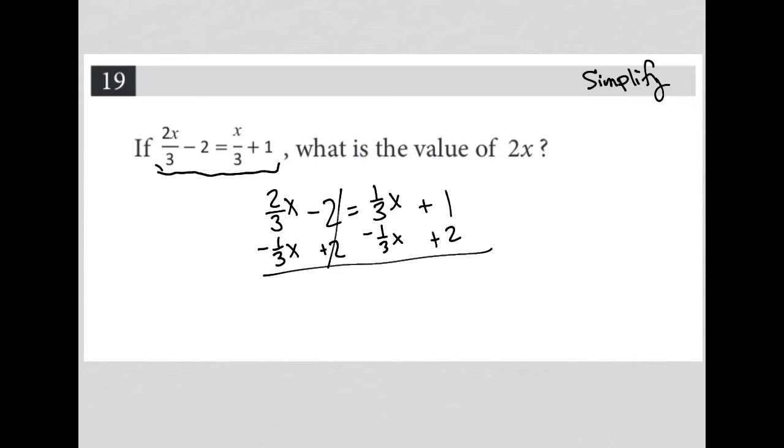In doing that, my twos cross out, my one third x crosses out from there. Two thirds x minus one third x is one third x.